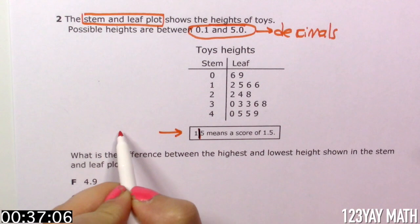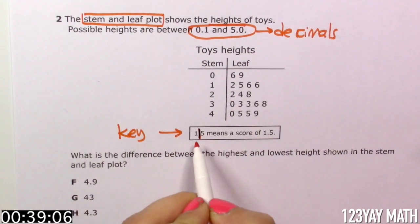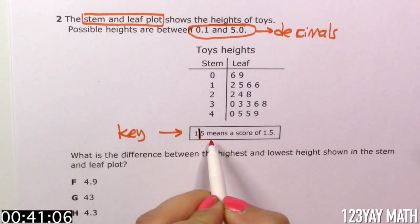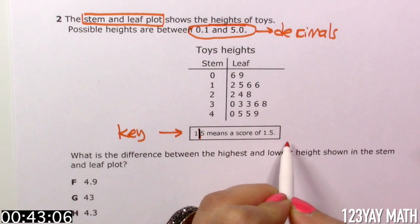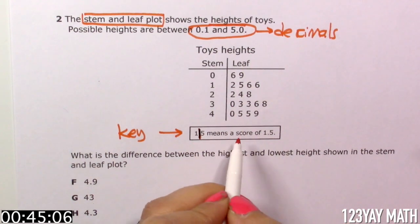This is very important. It says 1 line 5 means a score of 1.5. How do we interpret that?